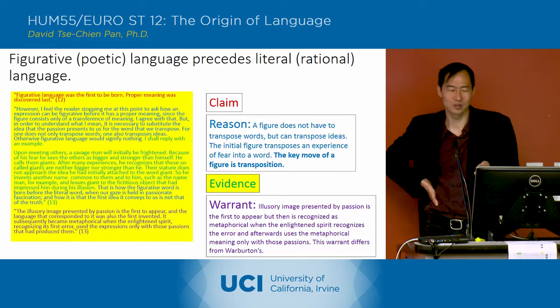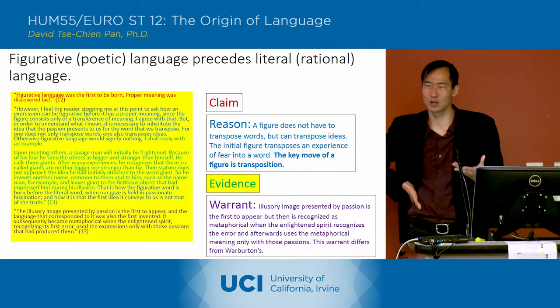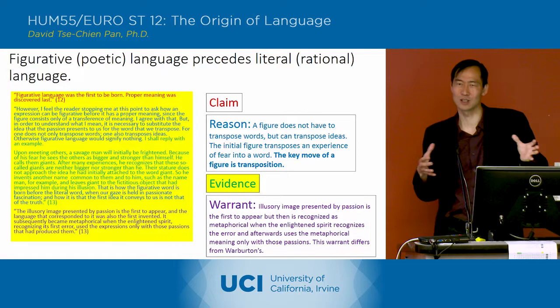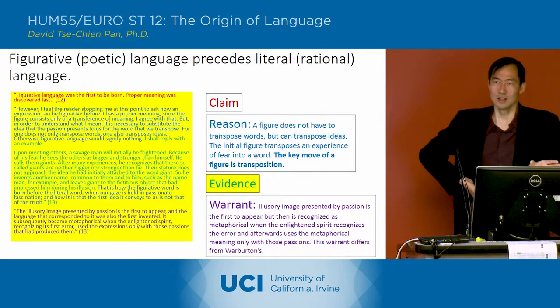The reasoning is that a figure does not have to transpose words, but can transpose ideas. The initial figure transposed an experience of fear into a word. So the key move is this transposition which a figure has to carry out — it's always a kind of metaphorical thing, taking two things that don't belong together and linking them. So there's a transposition of A to B.